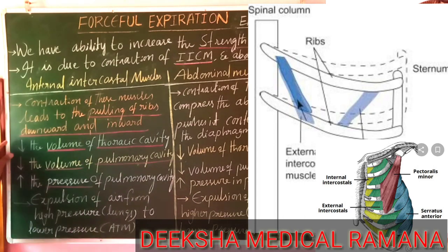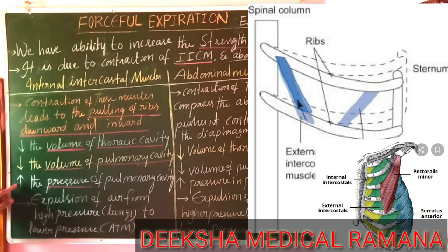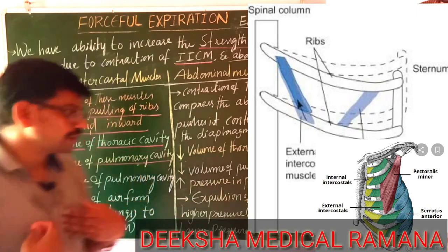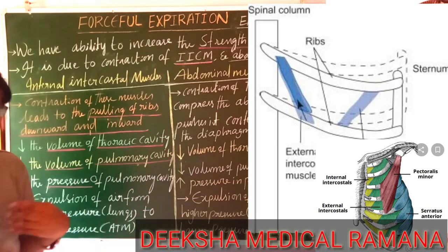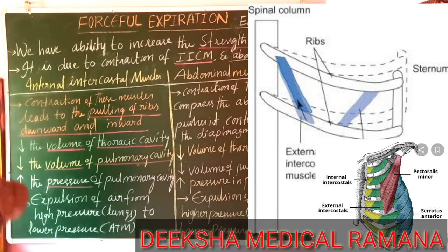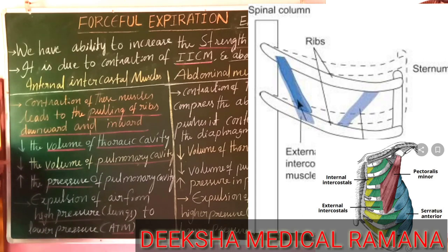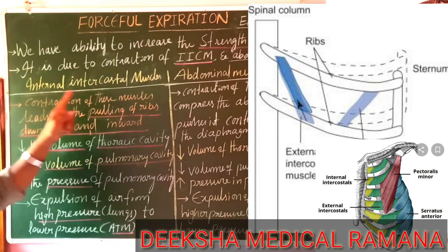Boyle's law explains that volume is inversely proportional to pressure — whenever the volume decreases, automatically the pressure increases. So the pressure increases in the pulmonary cavity. Whenever the pressure increases in the pulmonary cavity, air moves from high pressure to low pressure. Compared with the atmospheric pressure, our intrapulmonary pressure will be more, so the air moves from high pressure inside the lungs to low pressure in the atmosphere — that is the expulsion of air from the lungs to the atmosphere.